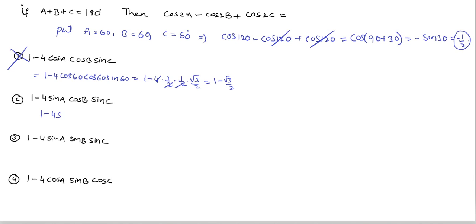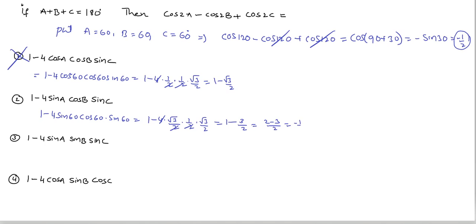The second option is 1 minus 4 sin a cos b sin c, that is 1 minus 4 into sin 60 (root 3 by 2) into cos 60 (1/2) into sin 60 (root 3 by 2). The 4 cancels, giving 1 minus 3 by 2, that is equal to 2 minus 3 by 2, which equals minus 1 by 2. So the second option is the correct answer.